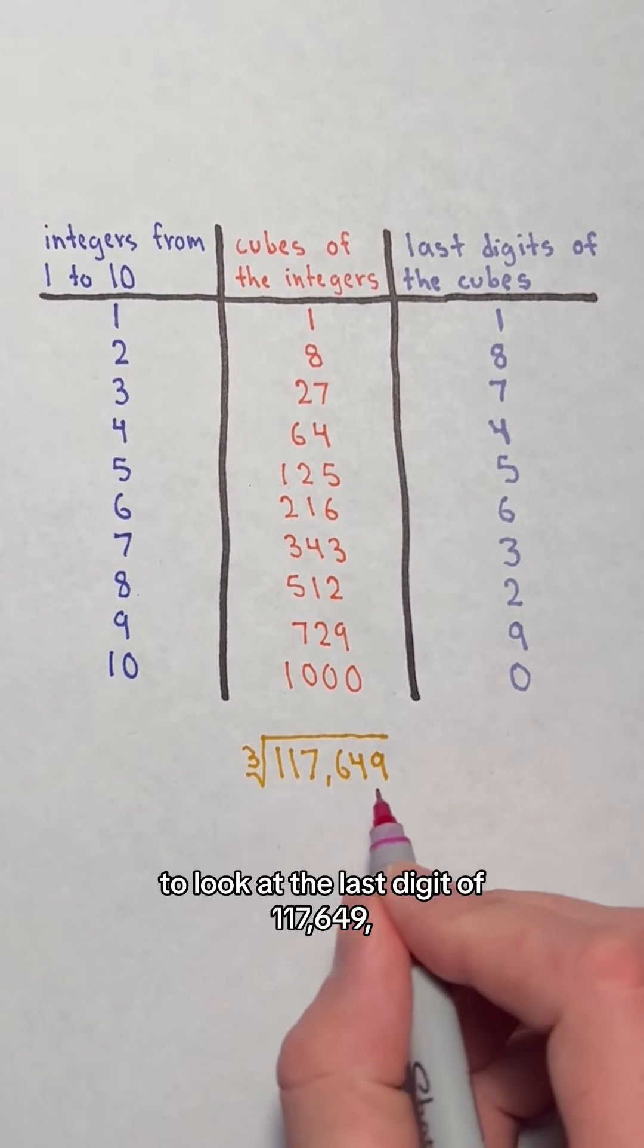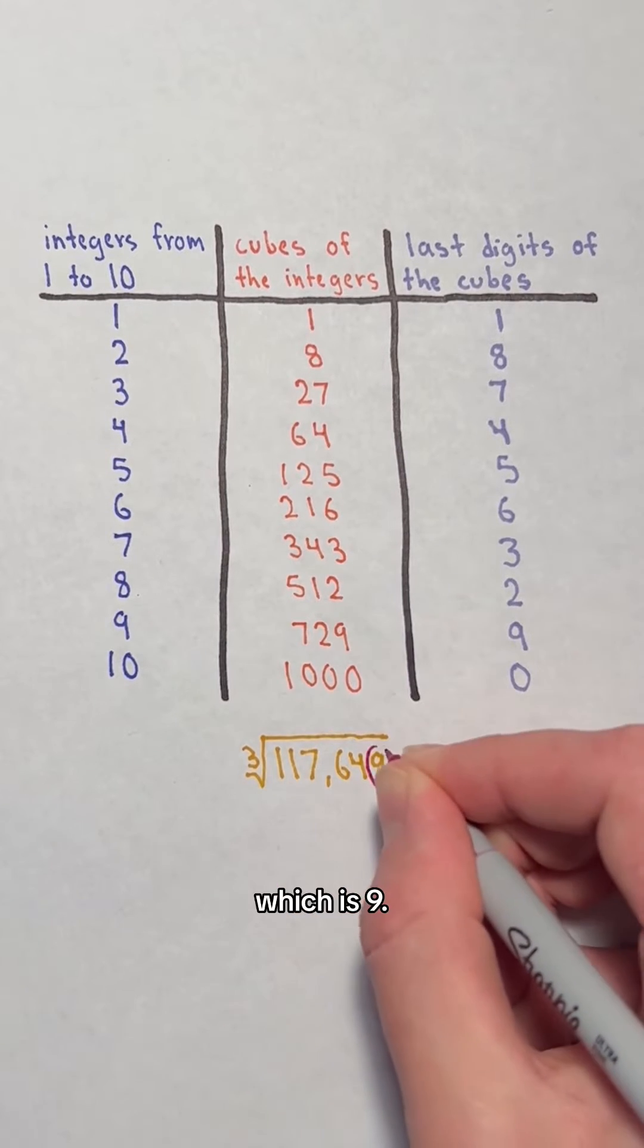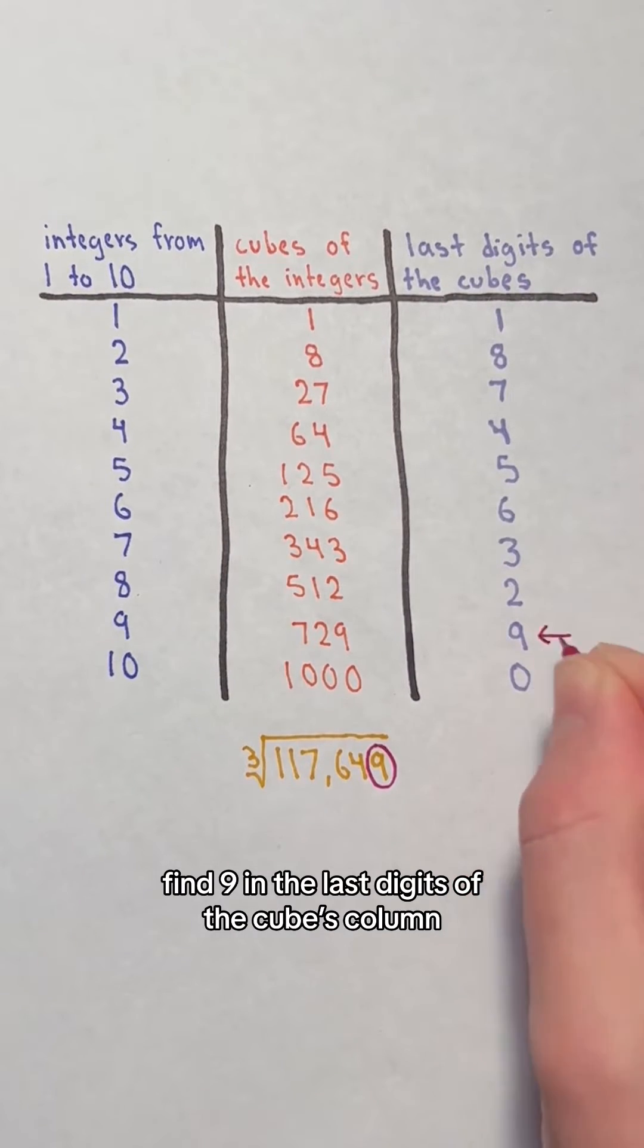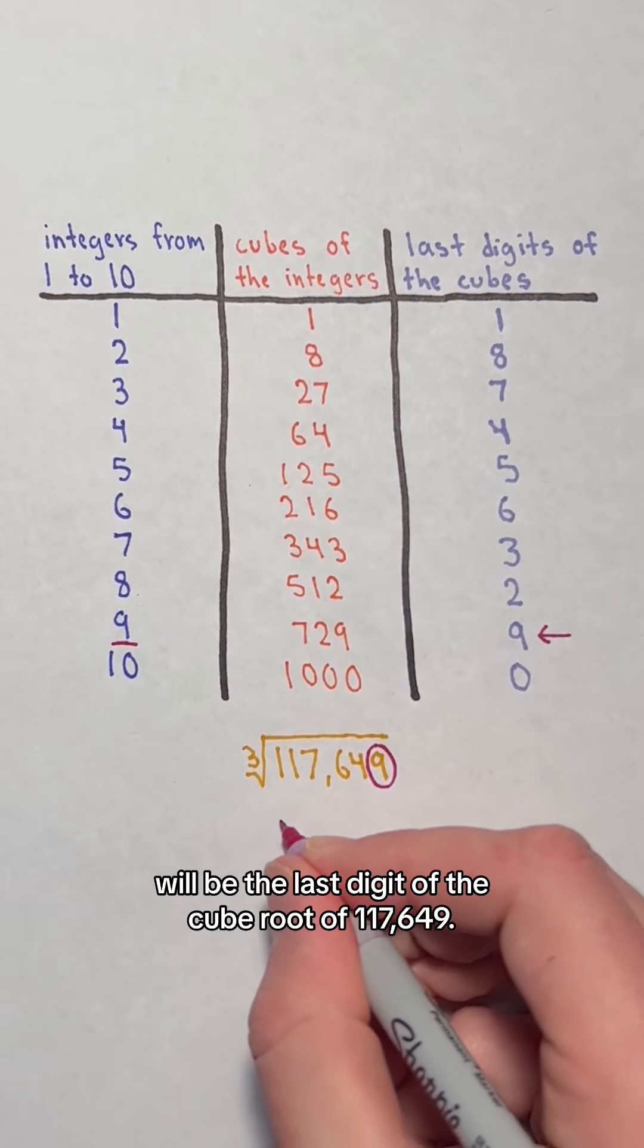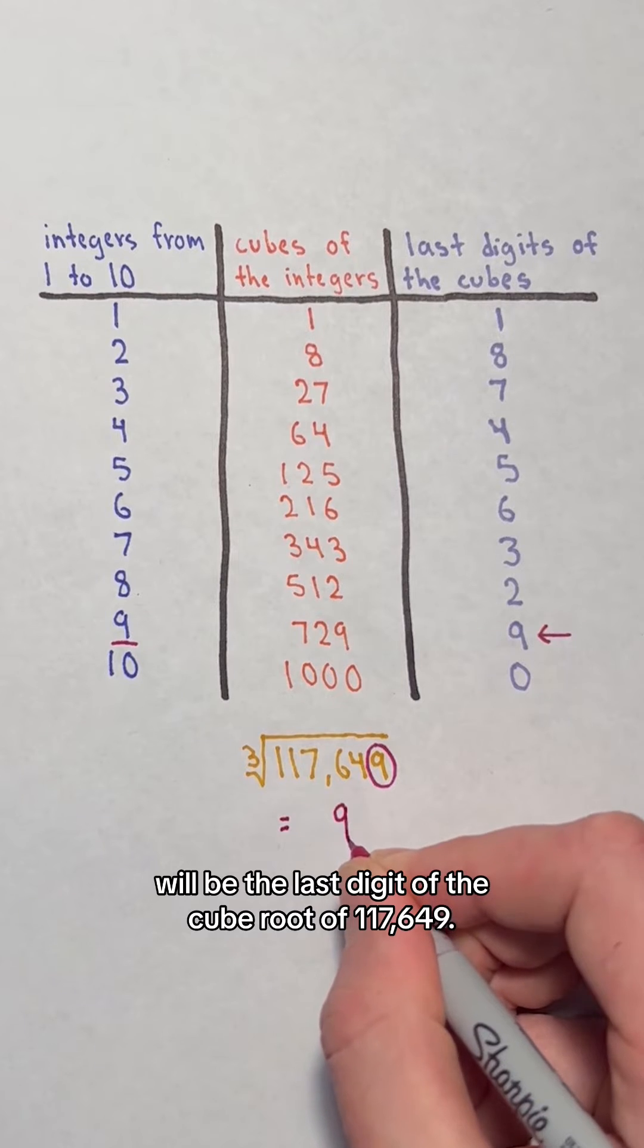The first step is to look at the last digit of 117,649, which is 9. Looking at the table, find 9 in the last digits of the cubes column and look at the number in the first column of the same row. That number, which is also 9, would be the last digit of the cube root of 117,649.